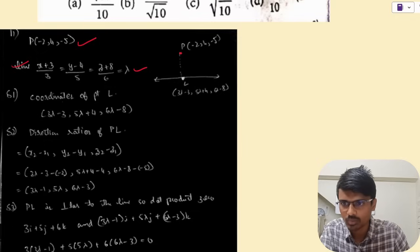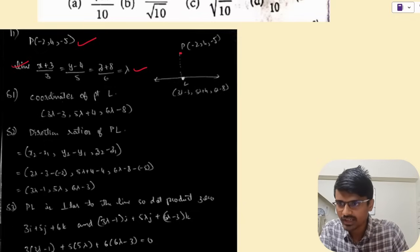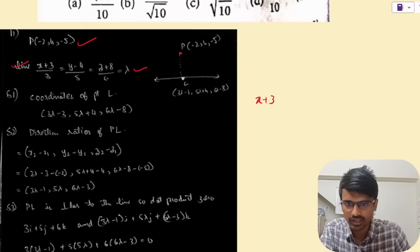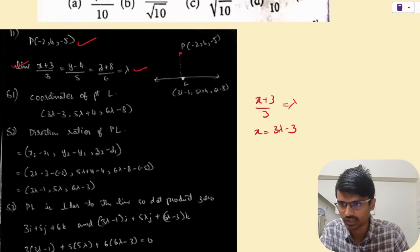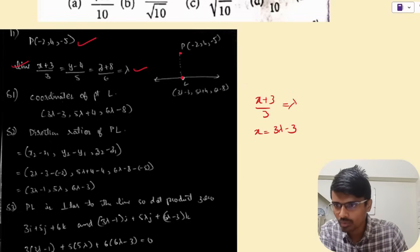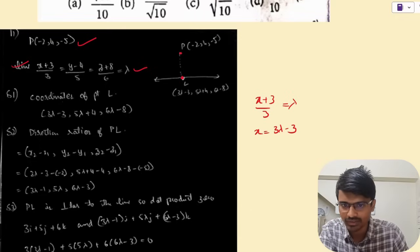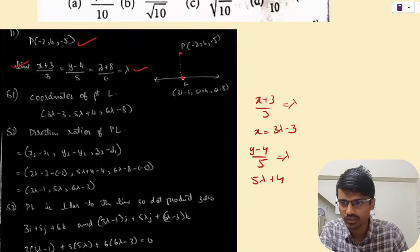Take the line equal to lambda. So (x+3)/3 = λ gives x = 3λ − 3. Similarly, (y−4)/5 = λ gives y = 5λ + 4, and (z+8)/6 = λ gives z = 6λ − 8. So the coordinates of point L on the line are (3λ−3, 5λ+4, 6λ−8). Now we have found the coordinates of L.